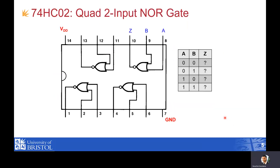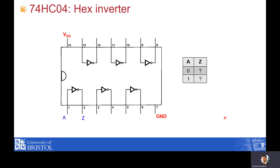Here is another example: the quad two-input NOR gate. That is another example, a hex inverter. The purpose of showing all this is not to explain them in detail, but just to introduce you to the idea, because these are things you're going to see in more detail during DB2.